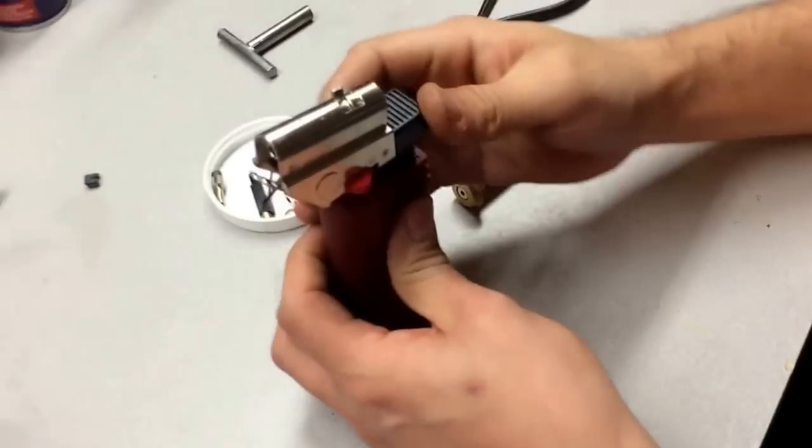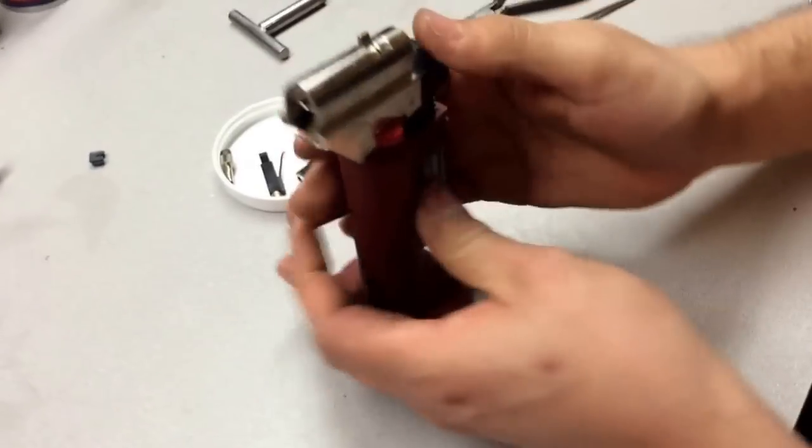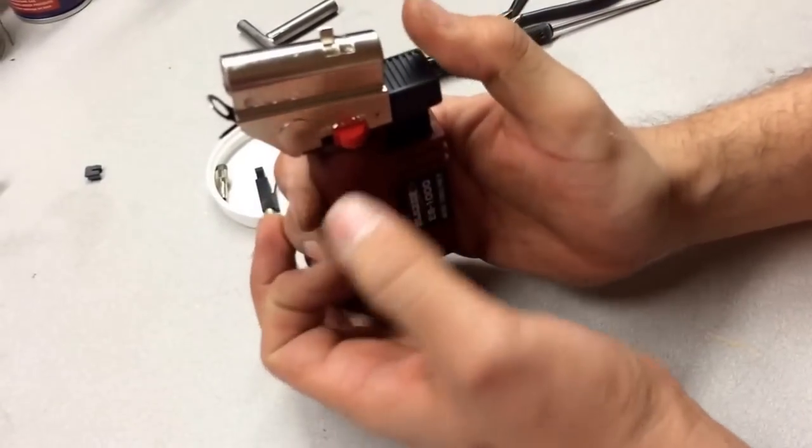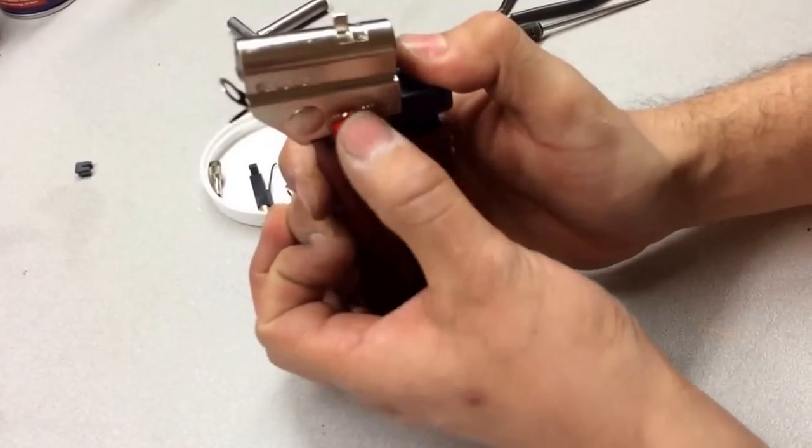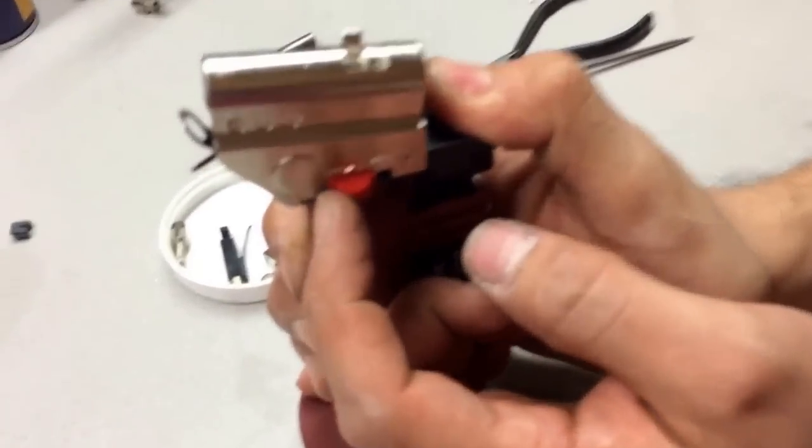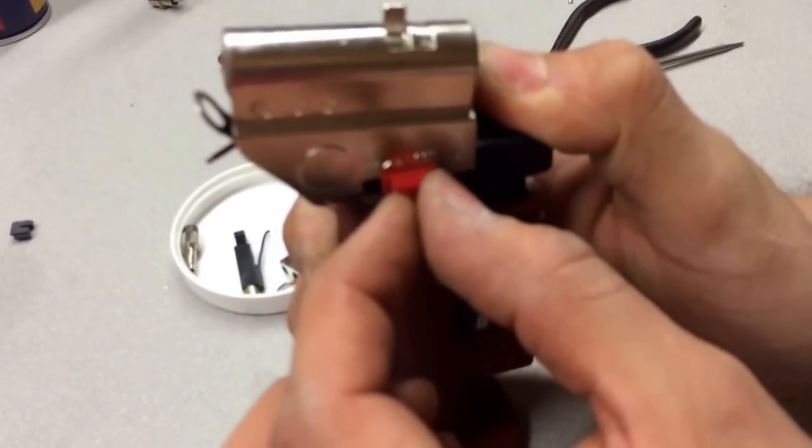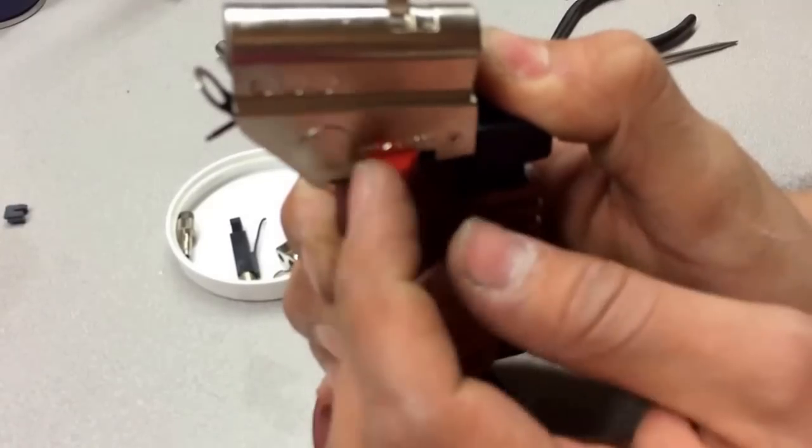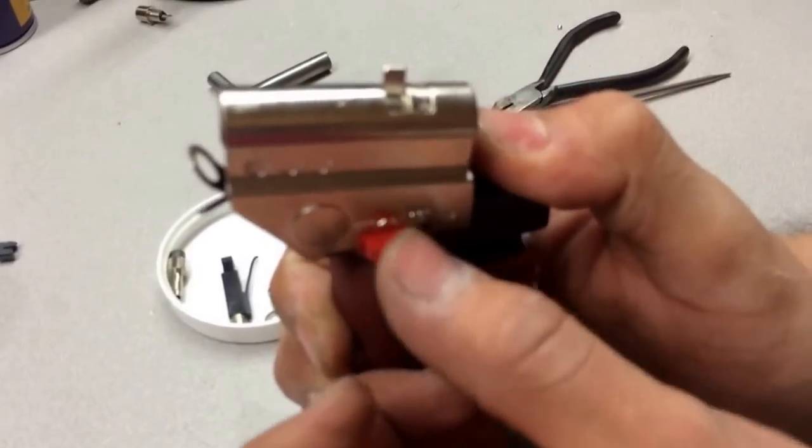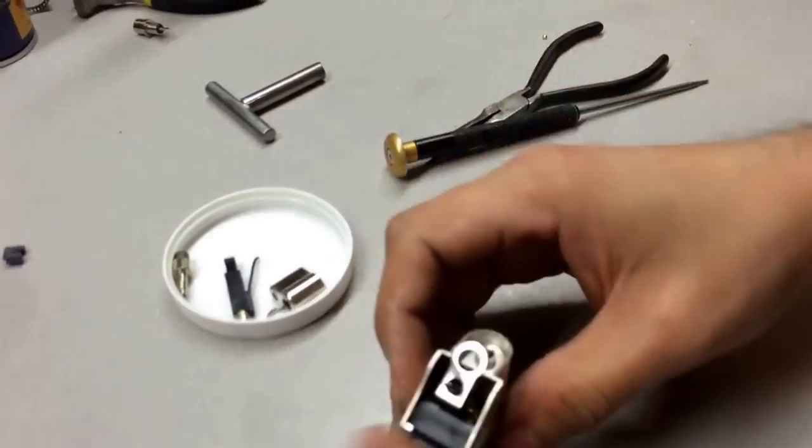All good there. Let's make sure that our gas is off still and make sure that our lock is working. So we know how to work these. If the trigger is depressed, you could slide the lock in the lock position or the off position. So that's working and it's doing exactly what it's supposed to be doing.